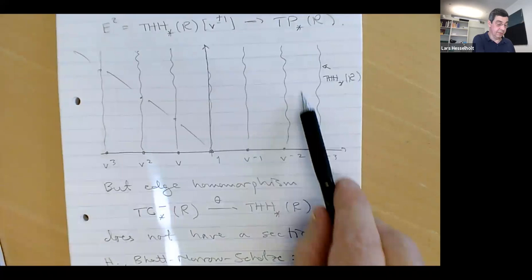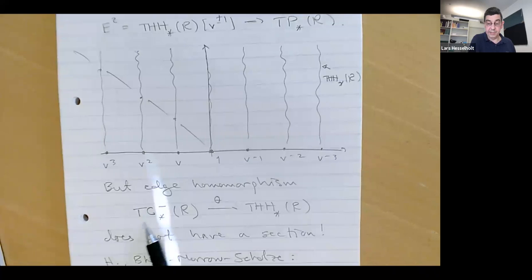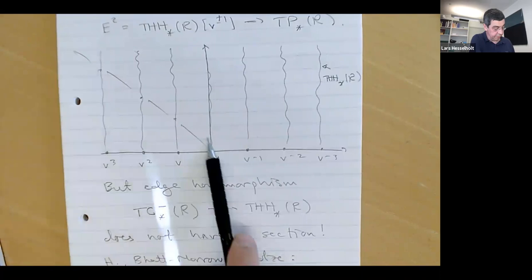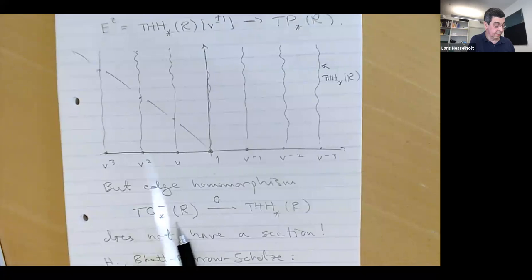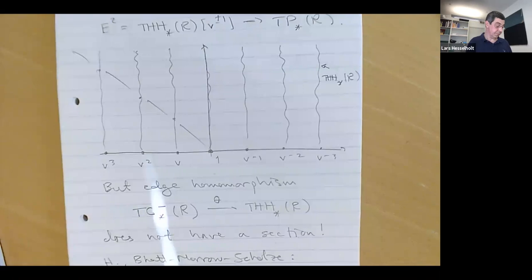We again have the edge homomorphism on pi-zero. TC-minus at degree zero is this whole line, and THH at degree zero is this top quotient. We have the projection onto this top quotient, but now that does not have a section. If R is commutative, then pi-zero of THH is R, but pi-zero of TC-minus is not an R-algebra — it's only a ring.